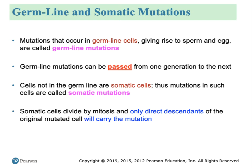Another important consideration, especially for multicellular creatures that reproduce sexually, is where does the mutation originate? The two locations are germ cells — otherwise known as germline mutations — and somatic cells, known as somatic mutations. Germline mutations are passed on from one generation to the next, whereas somatic mutations are only carried by that individual and the direct descendants of those cells through mitosis. When the individual dies, their mutation will die with them.